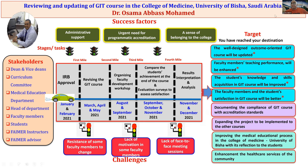My project outcomes are divided into three domains: short-term, intermediate, and long-term. Short-term outcomes include a well-designed outcome-oriented GIT course being updated, faculty members' teaching performance being enhanced, student knowledge and skills acquisition in the GIT course being improved, and faculty member and student satisfaction in the GIT course being better.